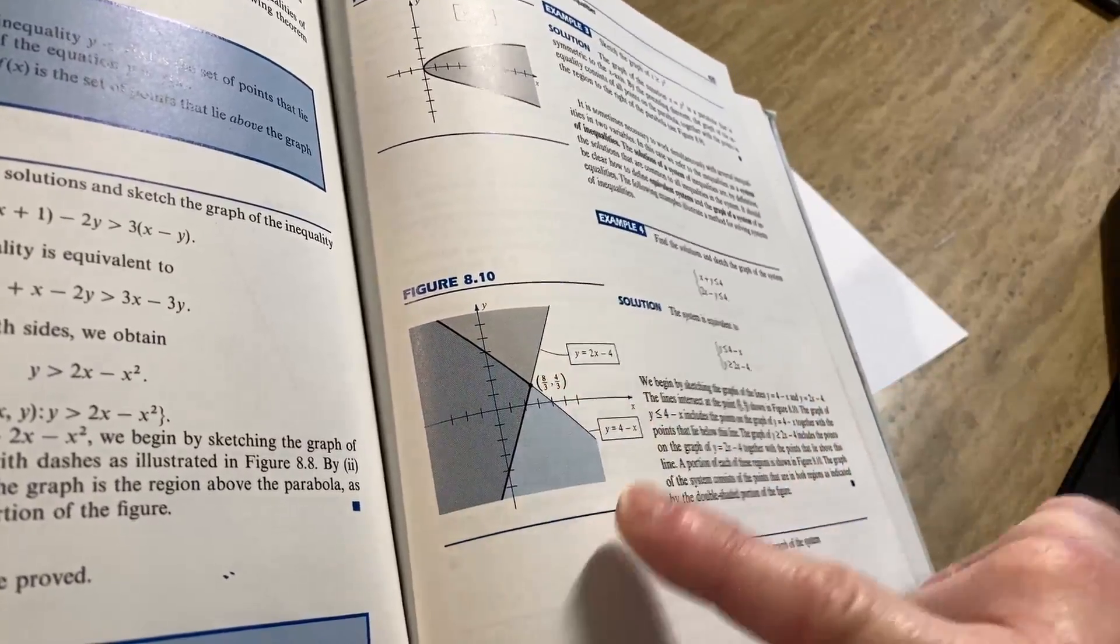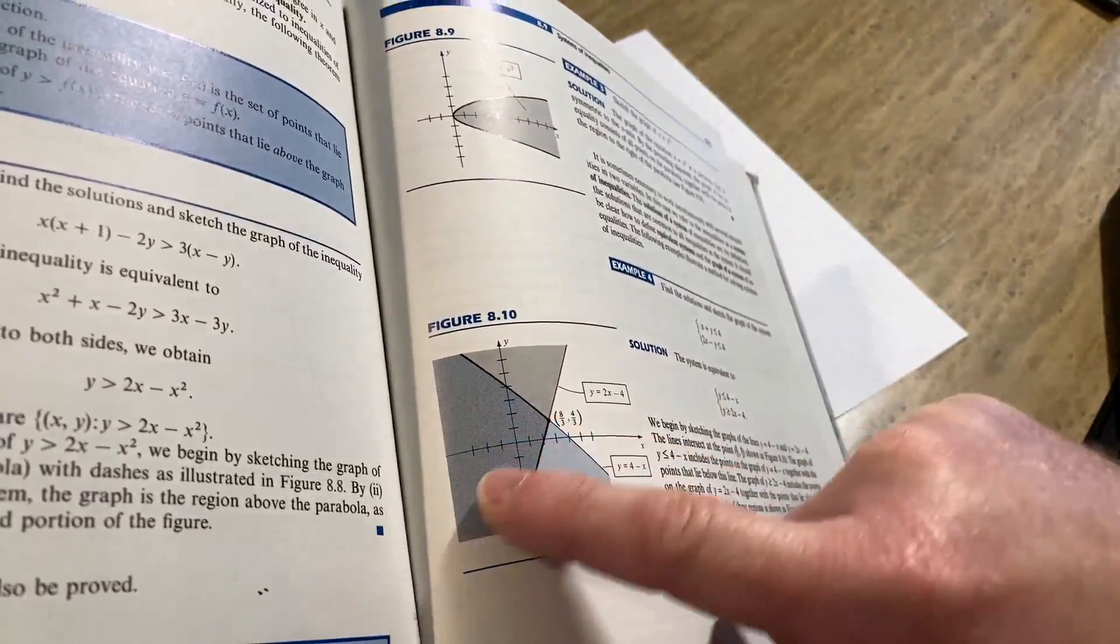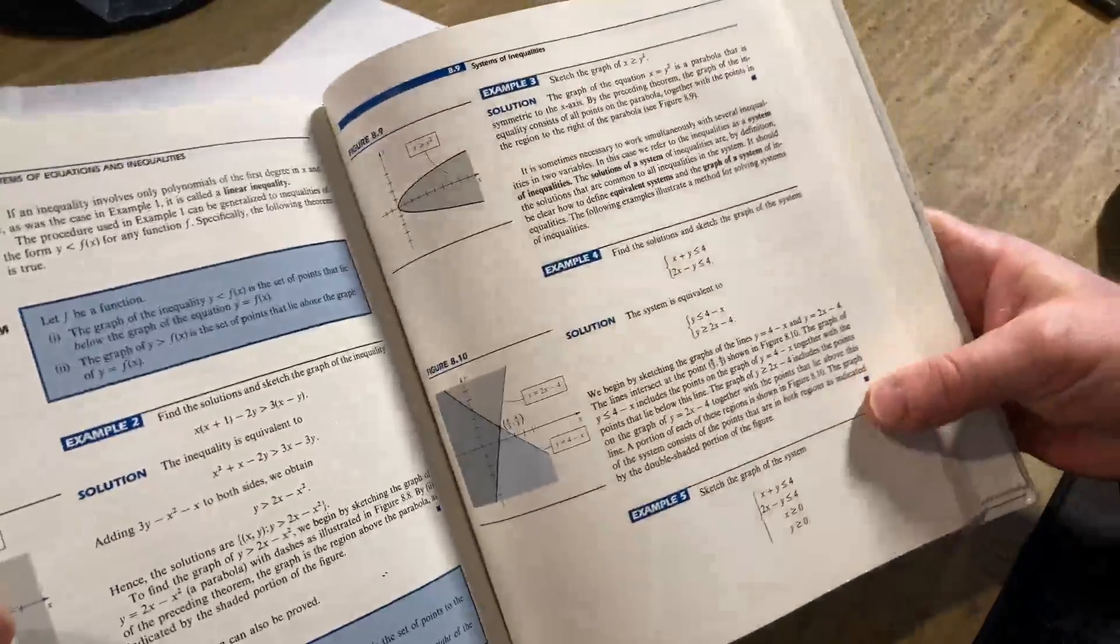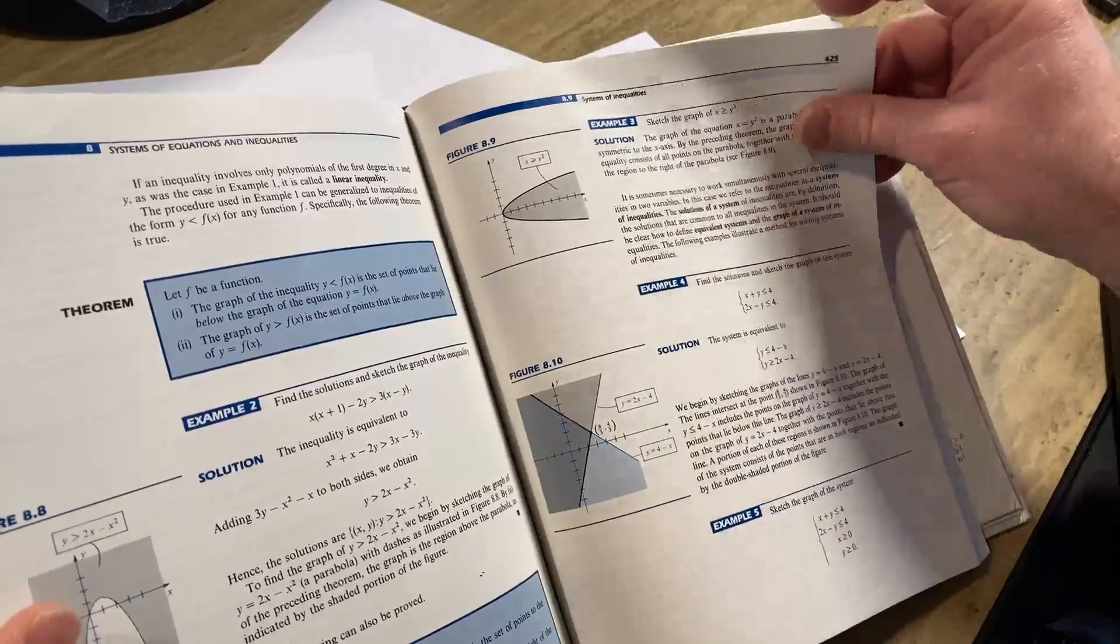So again, it's below this line, so down here and above this one, so up here. So the darker area, the shaded area is where they intersect. Oh, this is cool. Look at this. You've got four inequalities in example 5. So stuff like this is nice. It's got good examples.